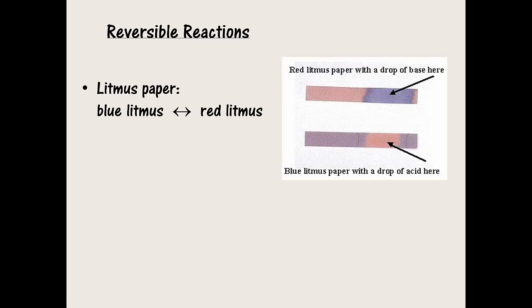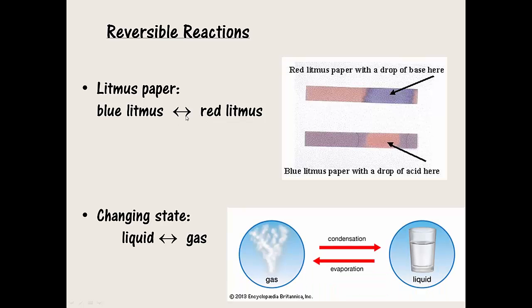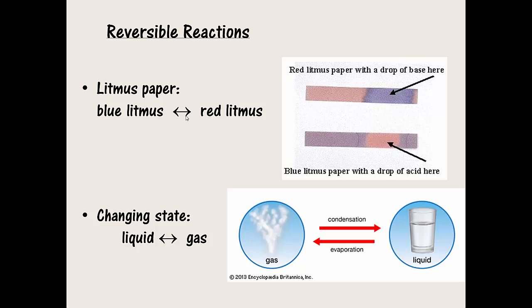Here are some more examples. Blue litmus can be turned red with the addition of some acid. And red litmus can be turned blue by the addition of an alkali. This is a reversible process between acid and base. Physical changes are all reversible processes, shown here by the reversible process of a liquid evaporating to a gas, and then being reversed by condensing back into a liquid.